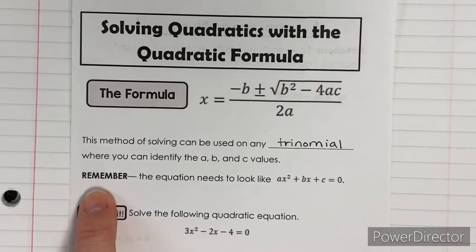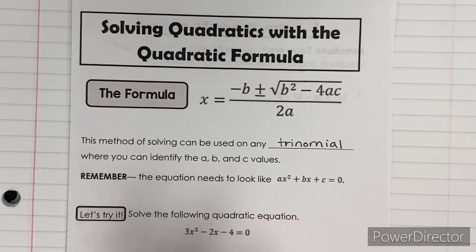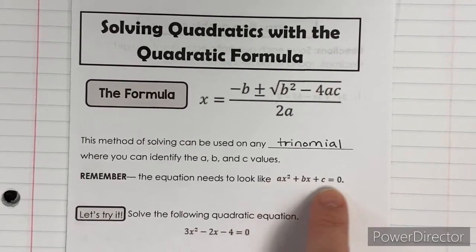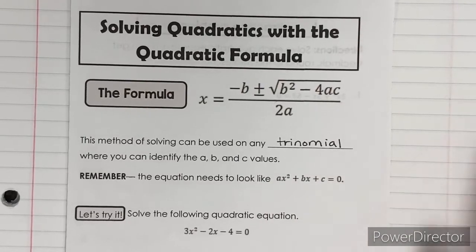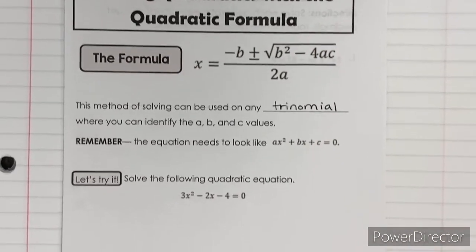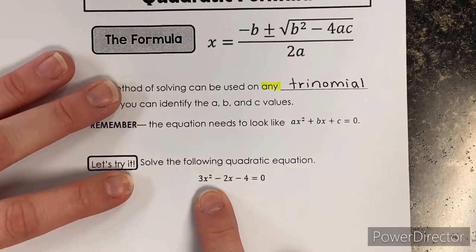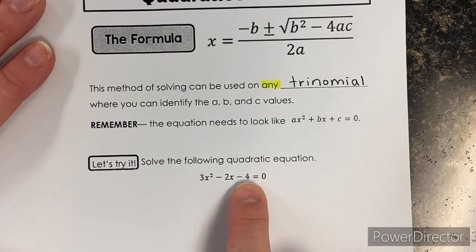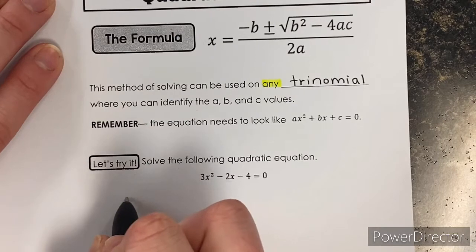One little reminder: the equation needs to be in standard form — we've got to have our three terms on the left side equal to zero. If it doesn't look like that, you just fix it, and there is a problem in these notes that's like that. So the first thing we need to do when we look at number one is identify our A, B, and C values. Our trinomial looks normal — all of the A, B, and C values are on the left side, so I can go ahead and start.